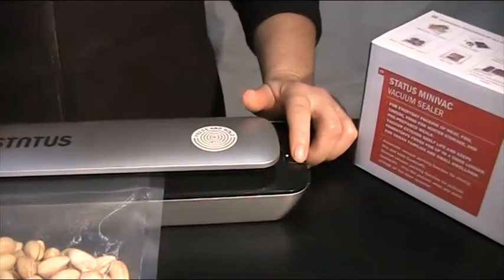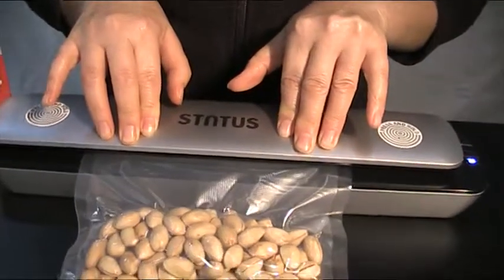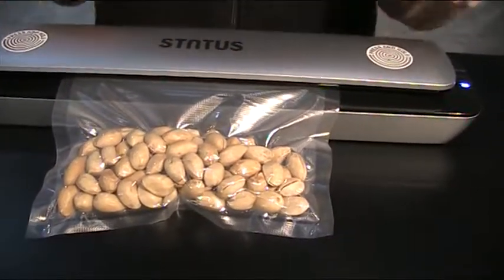Push the front vacuum seal button. Apply a little bit of pressure to the middle of the machine until you see some air coming out. And then let the machine go.